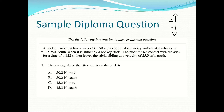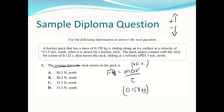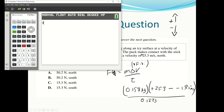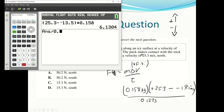We want the average force, so we use force times time equals mass times change in velocity — that's final minus initial. The mass of the hockey puck is 0.158 kilograms. The final velocity is 25.3 m/s to the north, and the initial velocity is negative 13.5 m/s. The contact time is 0.122 seconds. So: (25.3 − (−13.5)) × 0.158 ÷ 0.122 = 50.2 N to the north.